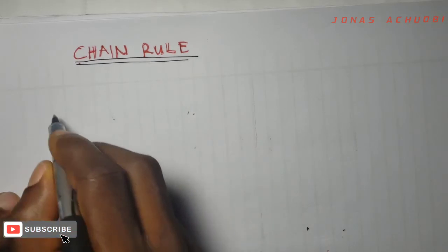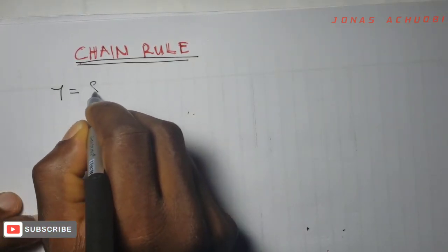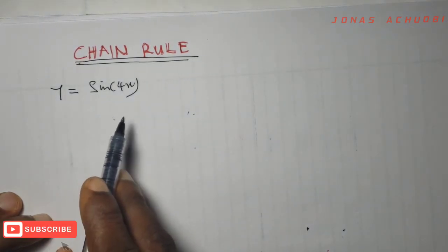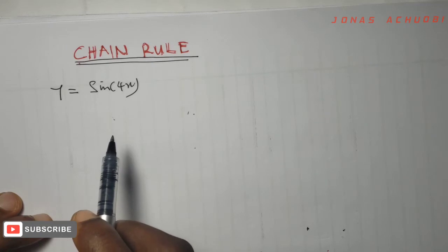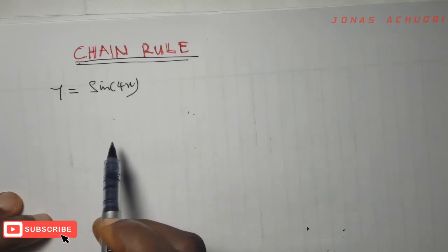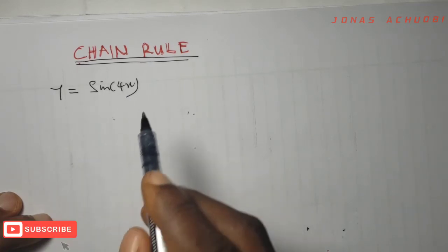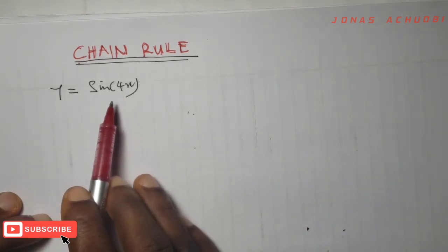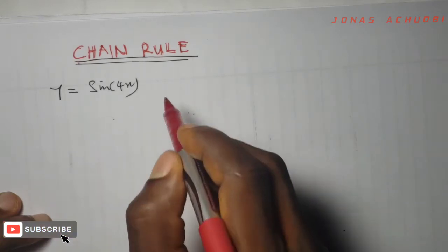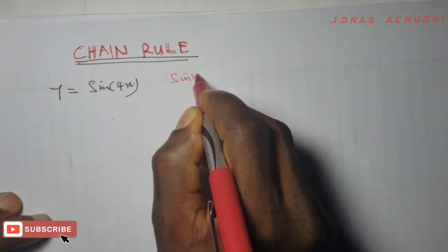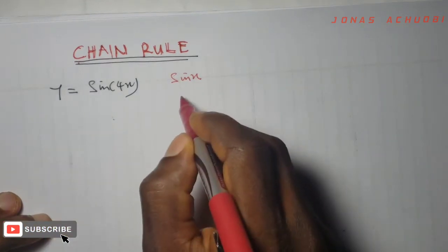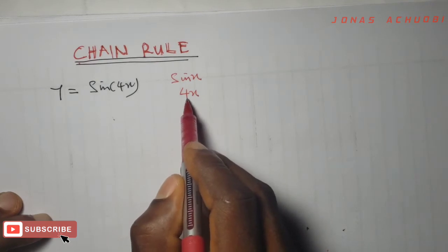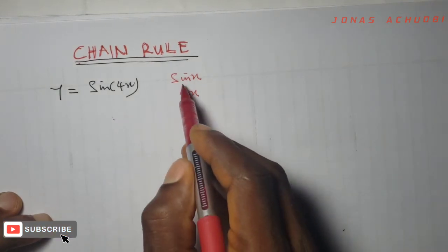For example, if we have y equal to sine 4x and we are asked to differentiate this function, do we see this as a composite function? If you look at this function closely, the right-hand side — sine 4x — you observe that there are two functions here: the first is sine x, and the second is the one inside, which is 4x. So 4x is sitting inside of the sine function.